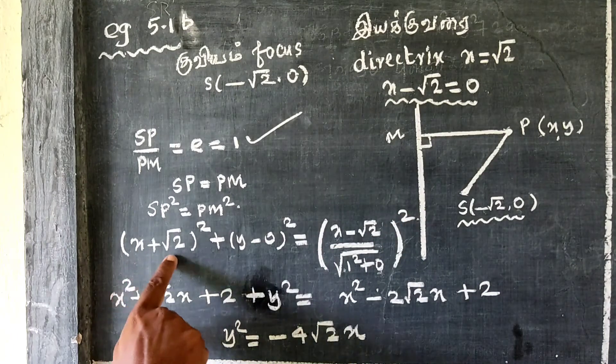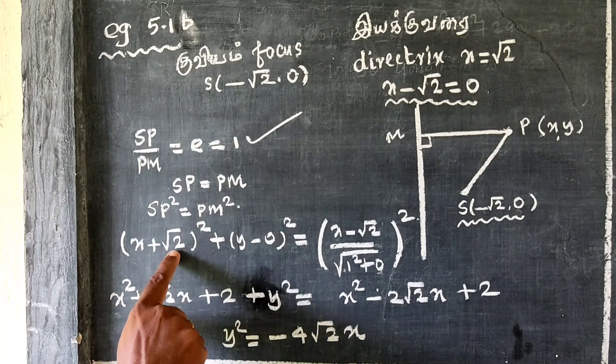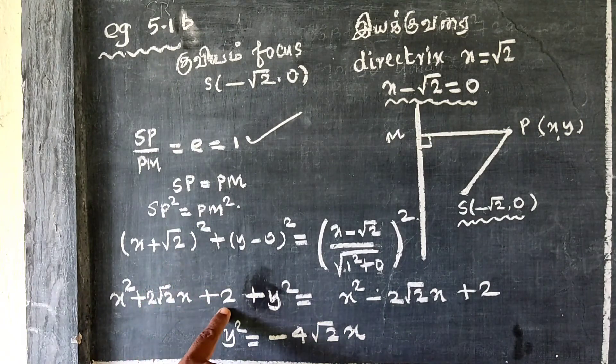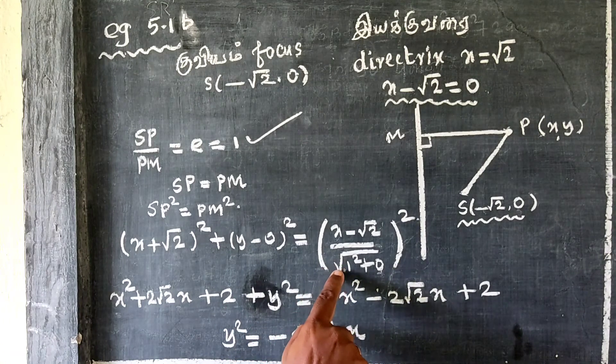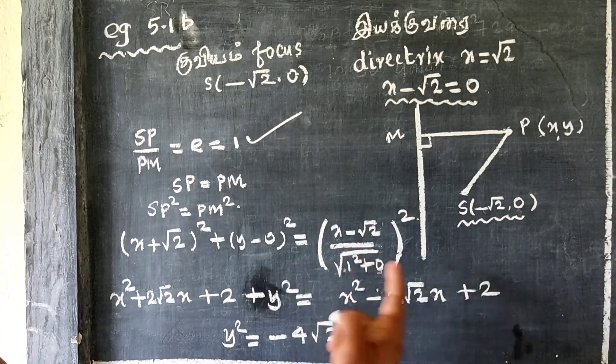Expanding the left side using (a + b)² = a² + 2ab + b², we get x² + 2√2x + 2 + y².